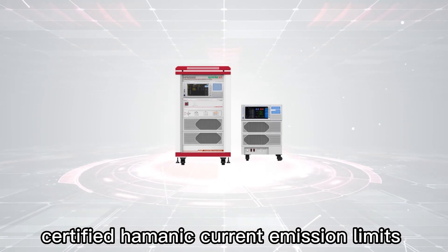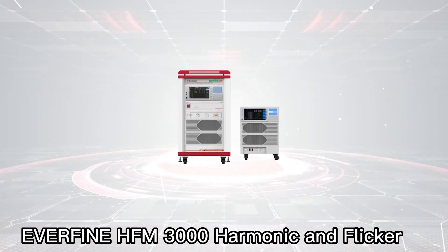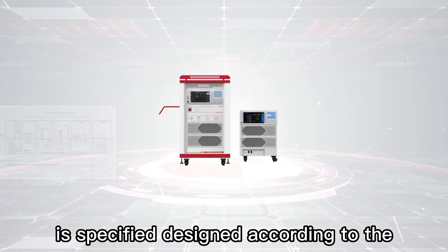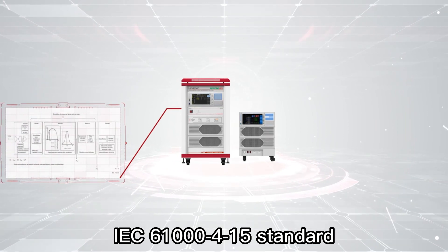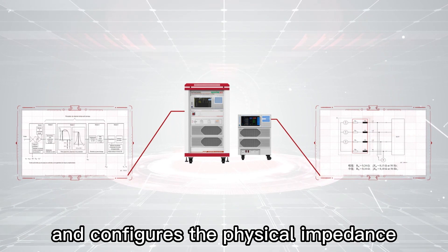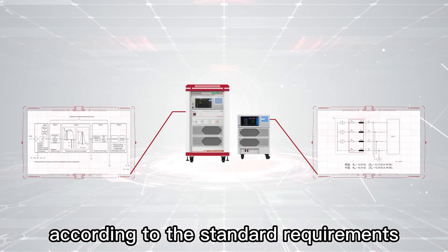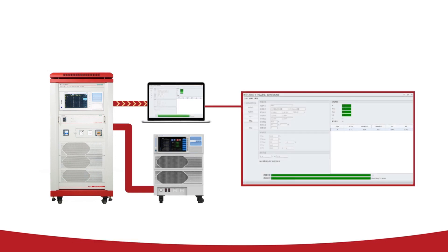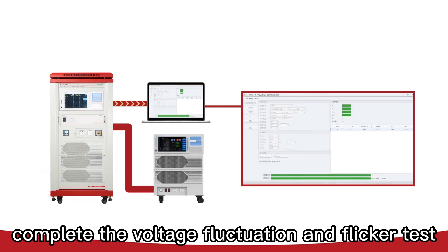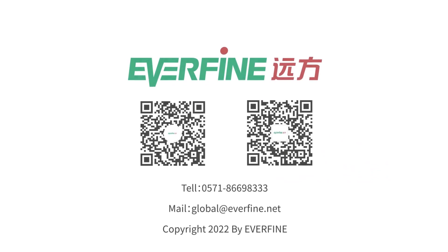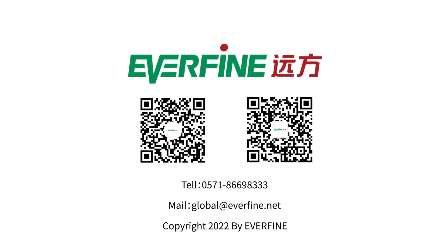In addition to the test of certified harmonic current emission limits, Itech's HFM3000 harmonic and flicker test system is specifically designed according to the IEC 61000-4-15 standard for flicker meter and configures the physical impedance according to the standard requirements. During the test, you can automatically switch the impedance, complete the voltage fluctuation and flicker test with one key, and generate a detailed test report. For more information, welcome to contact our Itech sales team.